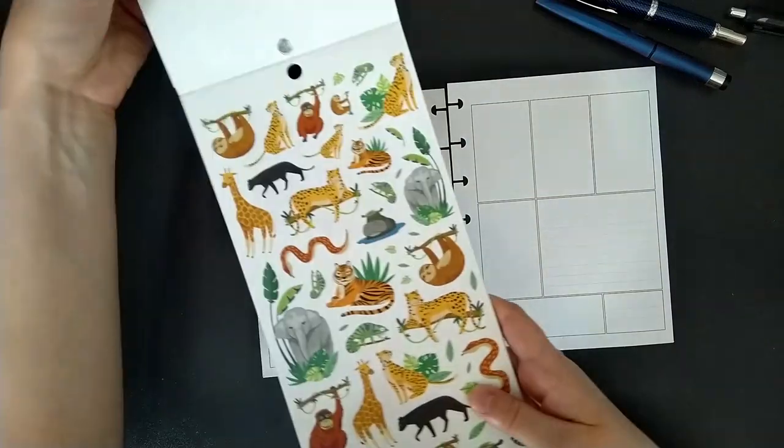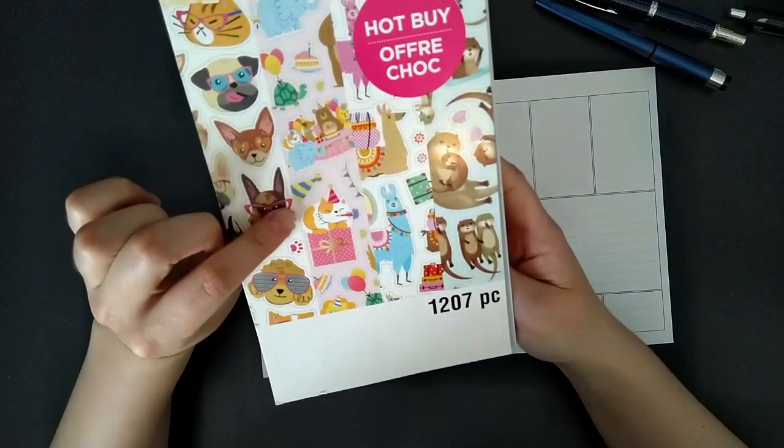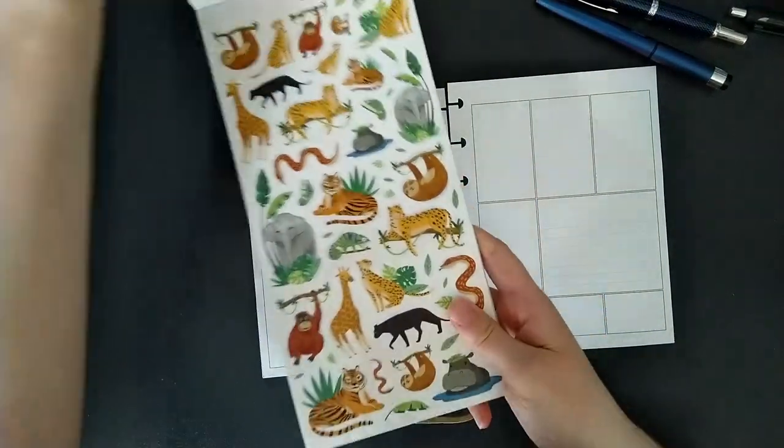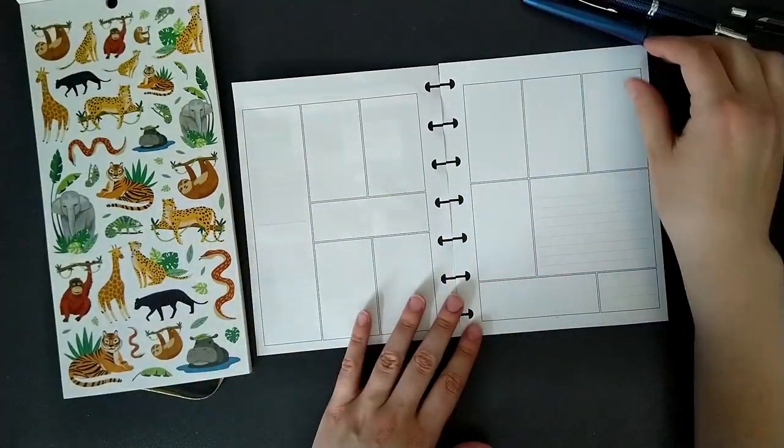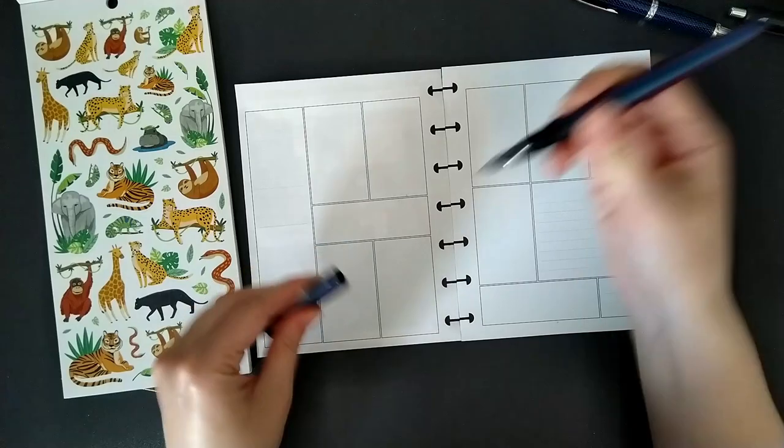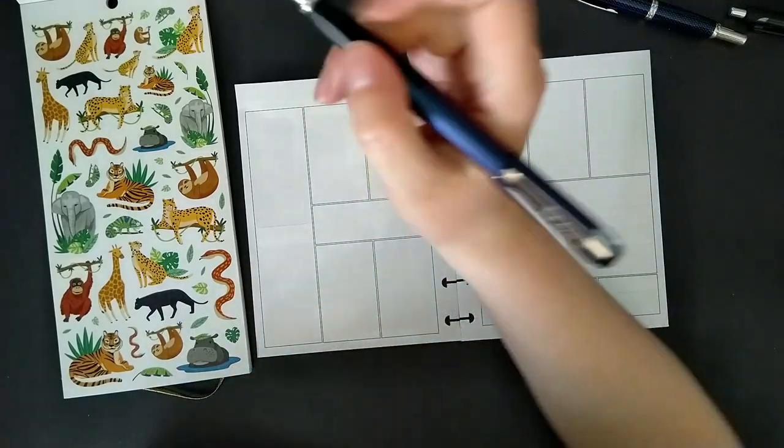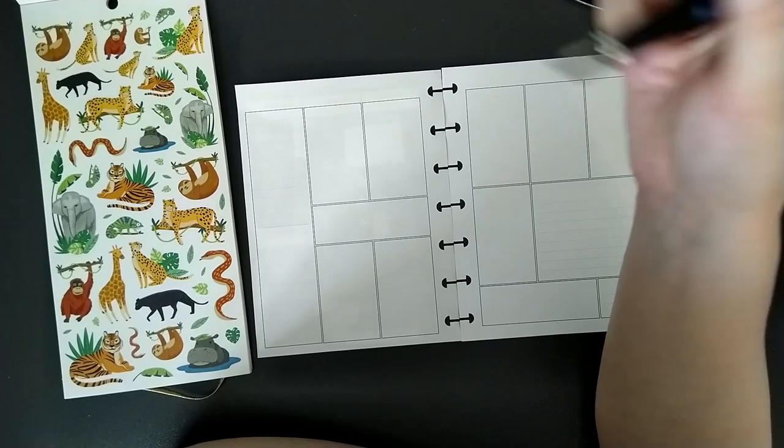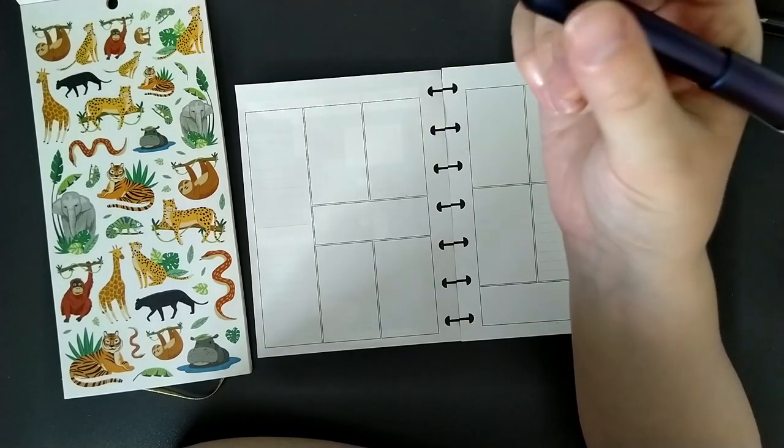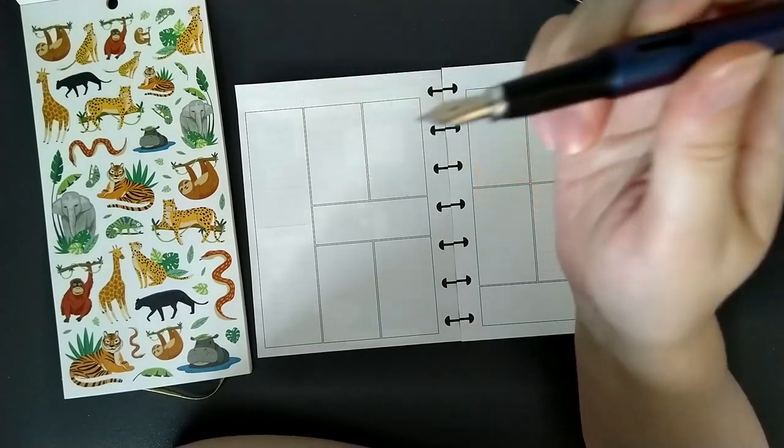So I'm going to use these stickers from this recollection sticker book from Michaels. I don't usually talk about buying pens this much, but I don't have any dates on here and I don't feel like finding date covers. So I'm just going to write it in.